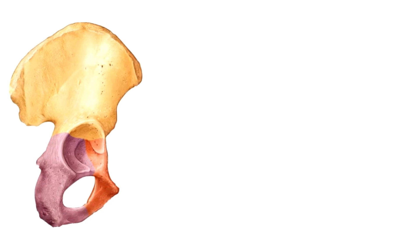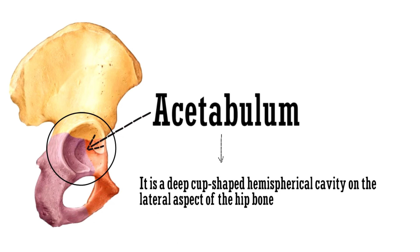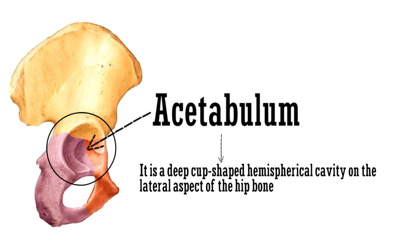This whole cavity is the acetabulum, formed by the bodies of ilium, ischium, and pubis. It is a deep cup-shaped hemispherical cavity on the lateral aspect of the hip bone. This hole is the obturator foramen.